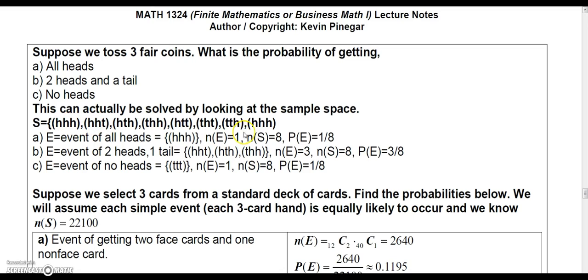And I noticed here this sample space is wrong. Let me fix this because this one should say tail, tail, tail. So let me fix that real quick. Okay. So now the sample space is correct. It's got all eight possibilities with the tossing of your three coins.